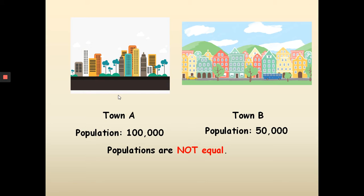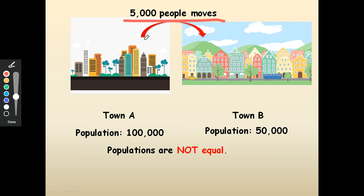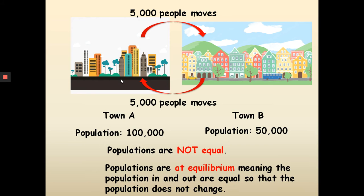What is then equilibrium? Equilibrium has to do with a change. Let's assume that there is a population change between town A and town B. About 5,000 people are moving from town A to town B, while meanwhile 5,000 people are moving back from town B to town A. When the change is constant, the population of both towns does not change, and we can call that the populations are at equilibrium.